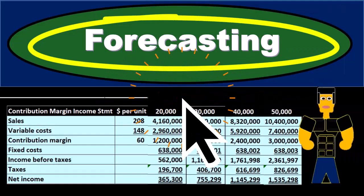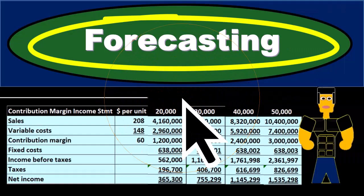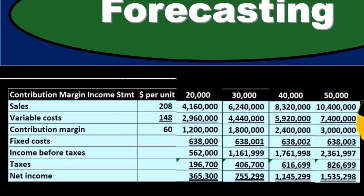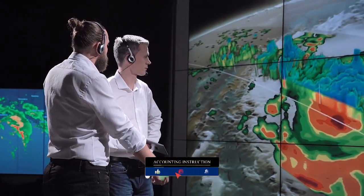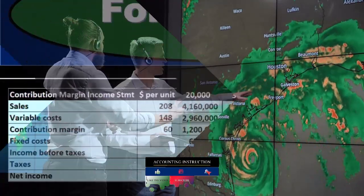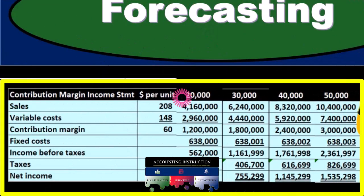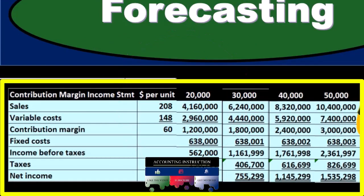The contribution margin, the contribution margin per unit, and the contribution margin ratio are very useful for the skill of forecasting. Once we have the fixed costs and the variable costs broken down to a fixed cost and variable cost per unit contribution margin, we can do a lot of forecasting very easily.